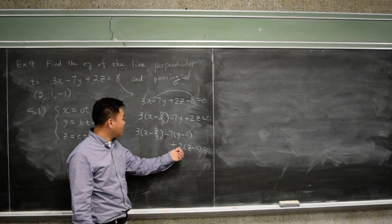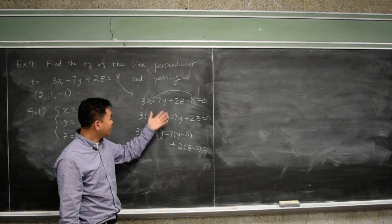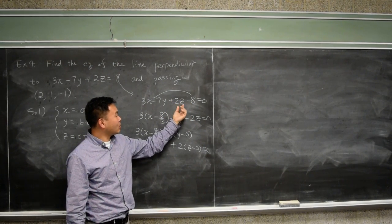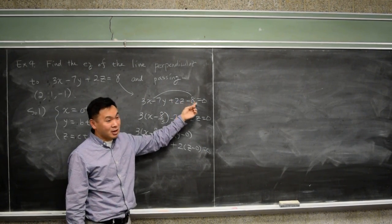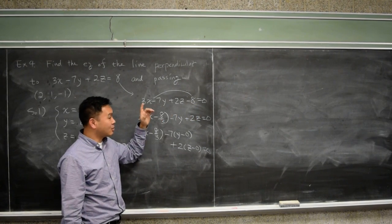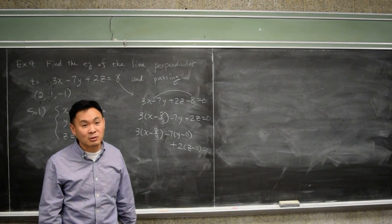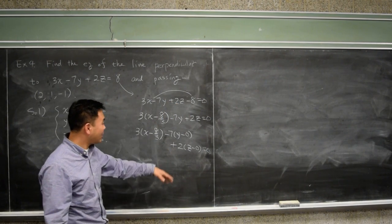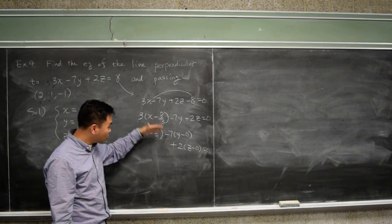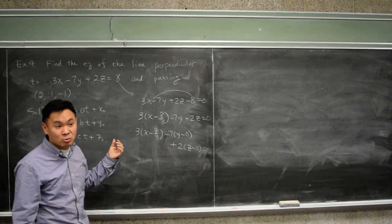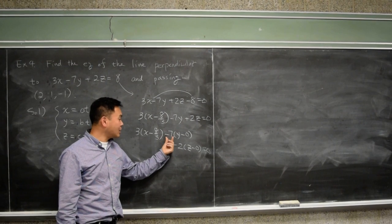Of course, this is not the only way to turn it into this form. You could also just divide out the 2 and write this as 2 times Z minus 4. In that case, it's a plane that passes through 0, comma 0, comma 4. That's another way to say it. But whichever way you transform this equation, you still see that it's always perpendicular to what vector? 3, negative 7, comma 2.